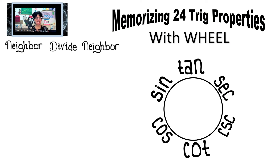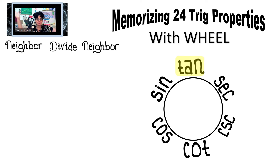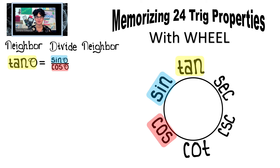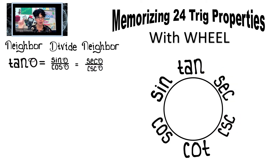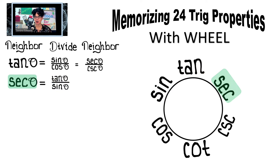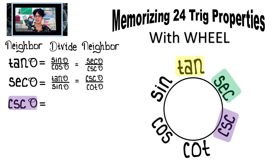Next up, I like to call these neighbor divide neighbor. Those last properties were product properties, and these ones are going to be quotient properties. Your textbook usually only gives you two quotient identities, but we're going to end up with 12. So tangent is its close next-door neighbor divided by the one after that — tangent is sine over cosine. Tangent is also secant over cosecant. Secant is tangent over sine, and it is also cosecant over cotangent.